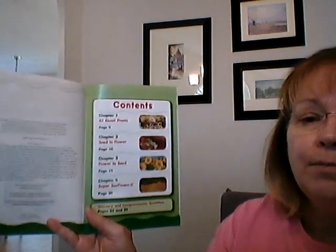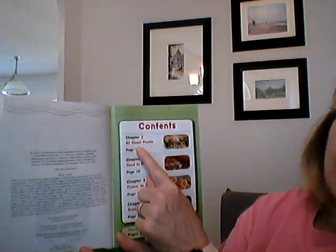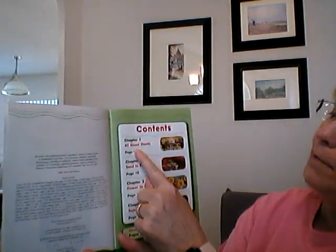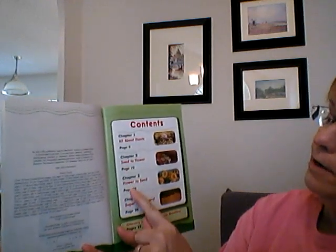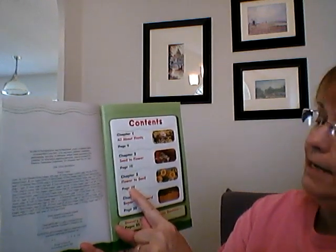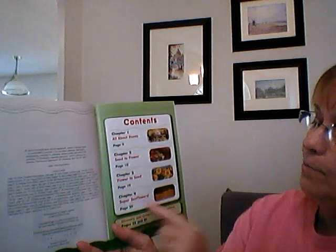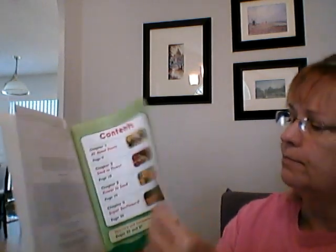Here's our table of contents. We have Chapter 1, All About Plants; Chapter 2, Seed to Flower; Chapter 3, Flower to Seed; and Chapter 4, Super Sunflowers.